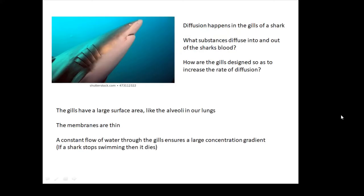But it does in this one — the shark. Diffusion happens in the gills of a shark. What substances diffuse into and out of the shark's blood? Just like our lungs, oxygen dissolved in the water diffuses into the shark's blood, and then carbon dioxide diffuses out.